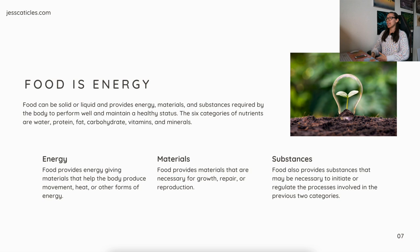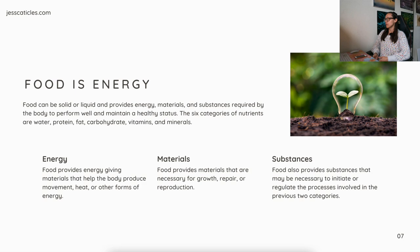The six categories of nutrients are water, protein, fat, carbohydrate, vitamins, and minerals. Food provides energy-giving materials that help the body produce movement, heat, or other forms of energy. Food provides materials necessary for growth, repair, or reproduction. And food also provides substances that may be necessary to initiate or regulate the processes involved in those previous two categories.